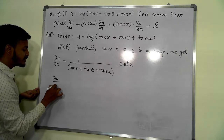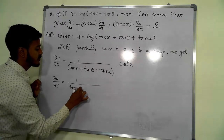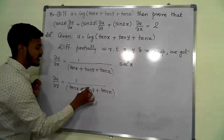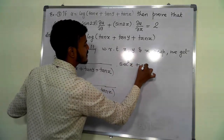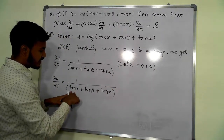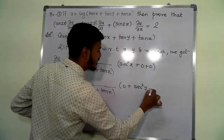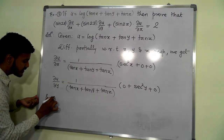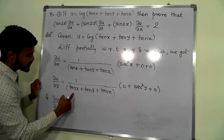Del u by del y is 1 upon tan x plus tan y plus tan z, multiplied by the derivative of tan y with respect to y, which is secant squared y. The derivatives of tan x and tan z with respect to y are both 0. Similarly, del u by del z is 1 upon tan x plus tan y plus tan z, multiplied by secant squared z.